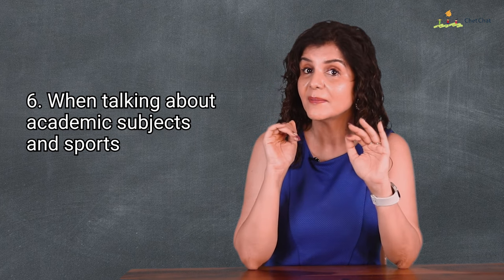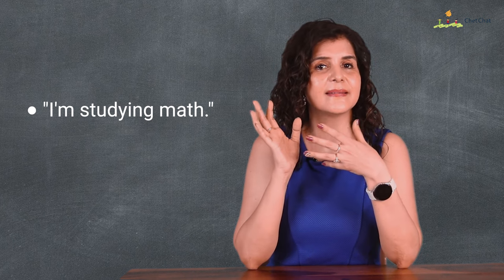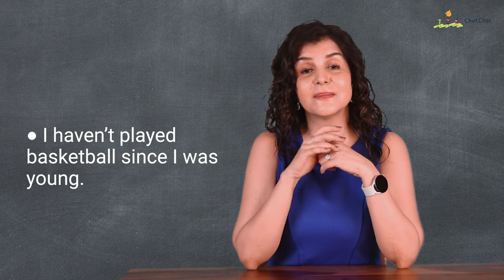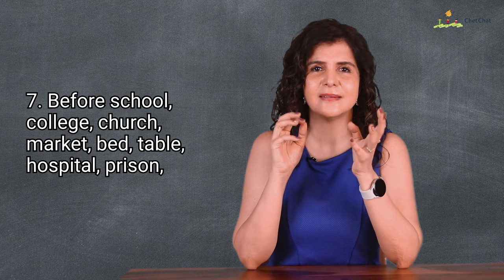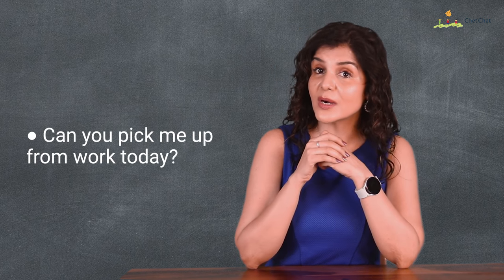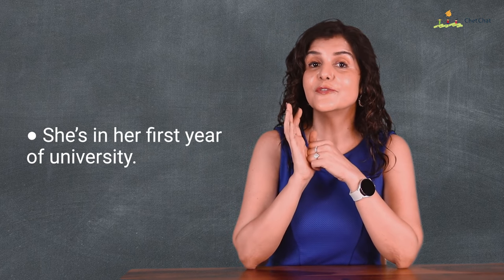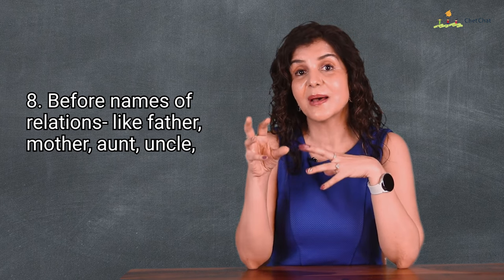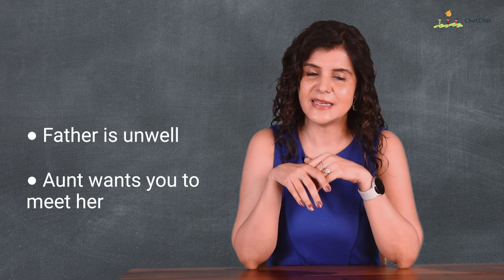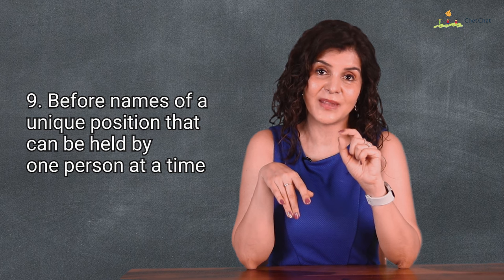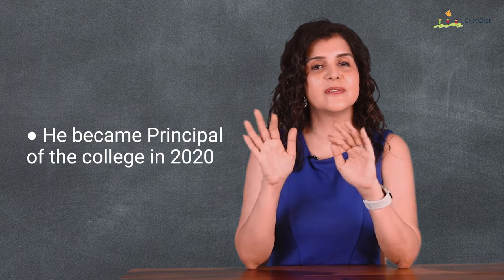No article is used before names of languages and nationalities: he is learning French; she can speak Spanish; I just found out I have Japanese ancestry. The only exception is when using language as a qualifier: I am studying the Spanish language. Articles are omitted when talking about academic subjects and sports: I'm studying math; I haven't played basketball since I was young. But for a specific assignment: I need help with the math homework. We usually do not use an article before school, college, church, market, bed, table, hospital, or prison: I go to church every Sunday; she is in her first year of university; dad's in hospital at the moment.